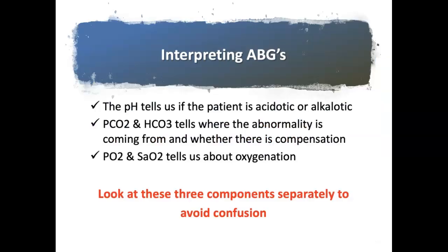When interpreting ABGs: the pH tells us if the patient is acidotic or alkalotic; the PCO2 and the bicarb tell us where the abnormality is coming from — whether from the lungs or from metabolism — and whether or not there's compensation; and the PO2 and SAO2 tell us about oxygenation. We're going to look at these components separately to avoid confusion.